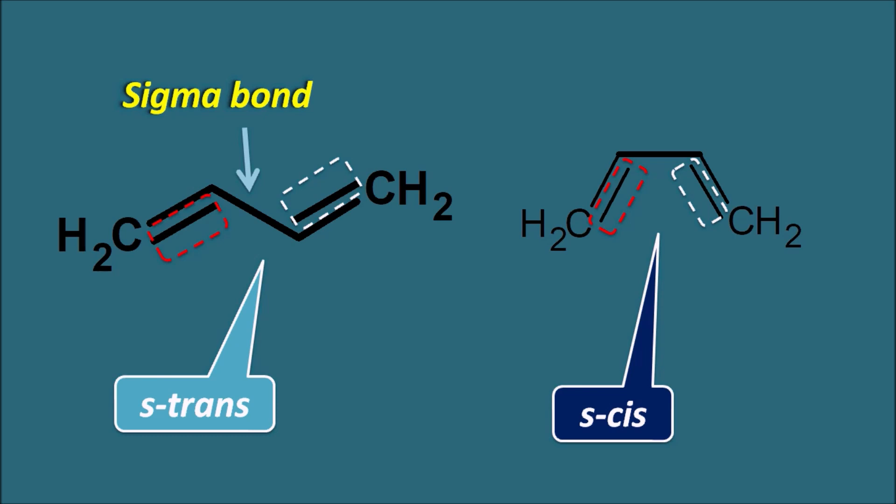The S-trans configuration is more stable than the S-cis configuration because the groups are more separated. But just like conformational isomers, these two configurations are easily interconvertible at room temperature, so they show only a little difference in their properties. However, sometimes we can fix this configuration by extension of the bonds, such that we can observe a large difference in their chemical properties.